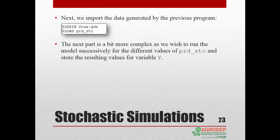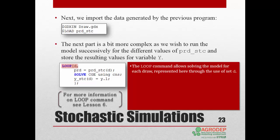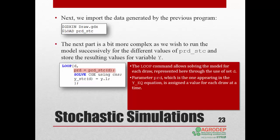The next part is a bit more complex, since we want to run the model for each value of prd_stc and store the results for variable Y in y_stc. As we saw previously in Lesson 6, this iterative process is best done using the loop statement. We use the loop command to solve the model iteratively over the draws or set D. So, for each draw or element of D, parameter prd, which appears in the income equation Y_EQ, is assigned the stochastic values stored in prd_stc. The model solves and parameter y_stc is assigned the solution value for each draw. Note the closing parenthesis of the loop statement and the semicolon at the end of the statement.